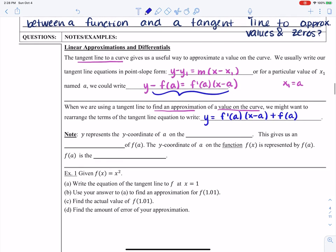And in this case, y is going to represent the y coordinate of a on the tangent line. That's really important. And this gives us an approximation of f of a. The y coordinate of a on the function f of x is represented by f of a, and f of a is the actual value.